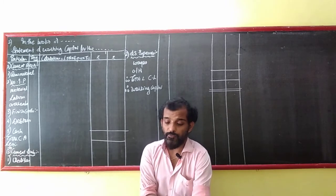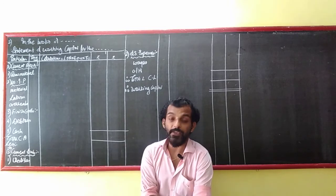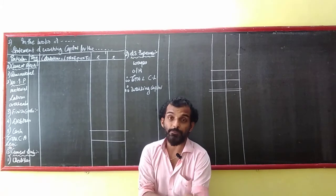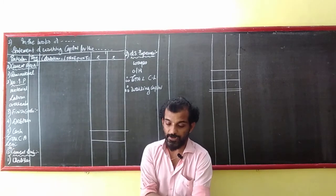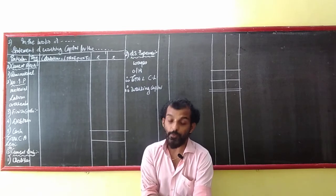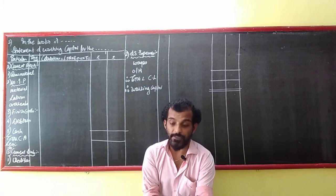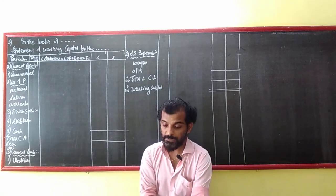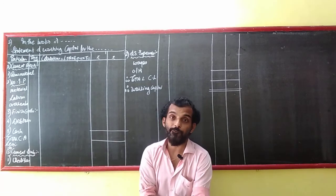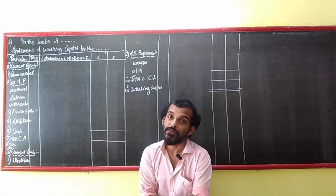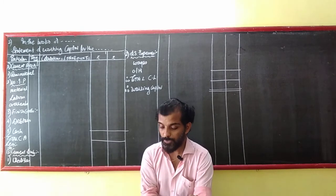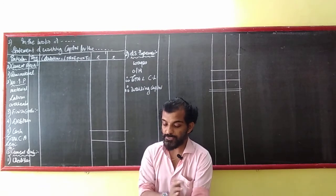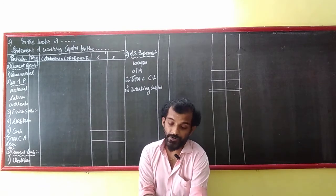Question number 2: from the following figures, prepare an estimate of working capital. Production: 30,000 units. Raw material is 60% of sales. Direct wages are 1/6th of material. Overheads are twice the wages. Selling price is 10. Material in hand: 2 months. Production time: 1 month. Finished goods: 3 months. Credit for material — creditors: 2 months.